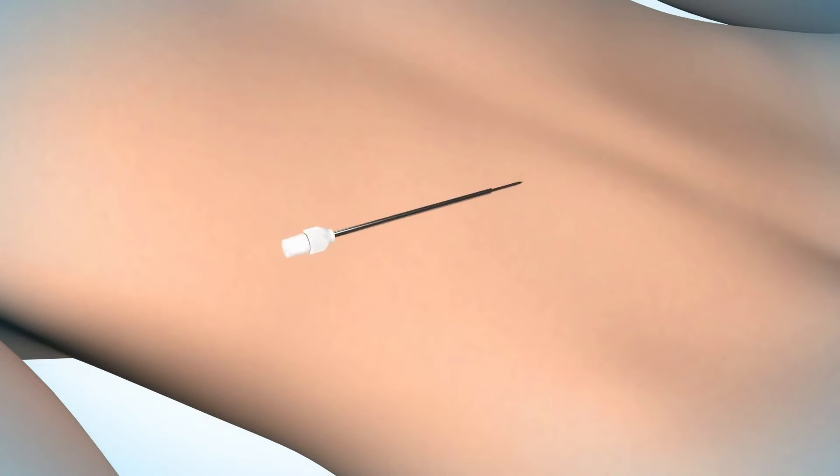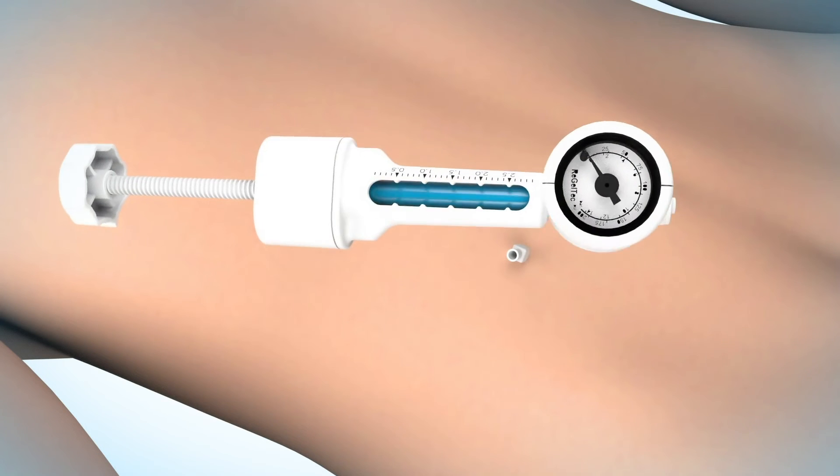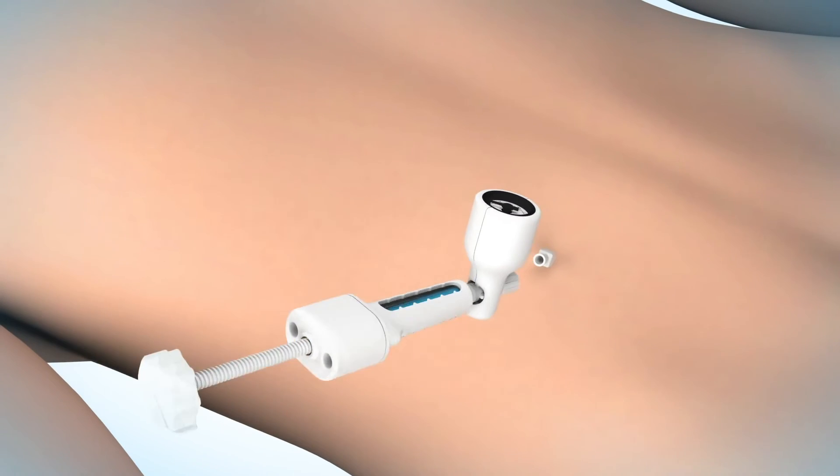The needle cannula and stylet are introduced and advanced to the central disc region to prepare for the gel injection. The stylet is removed and the primed, preassembled REGELTECH system is connected.